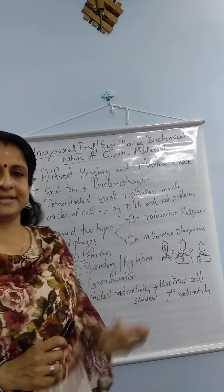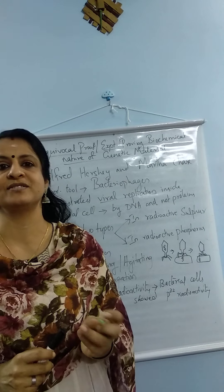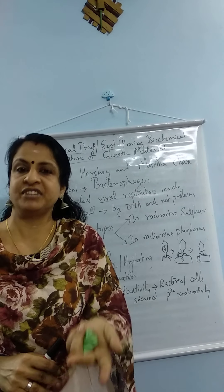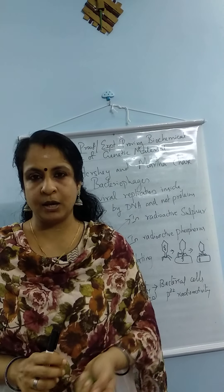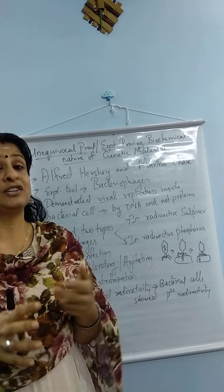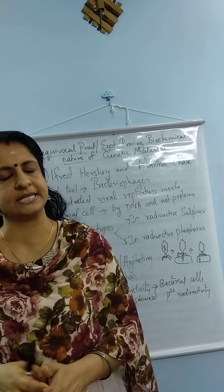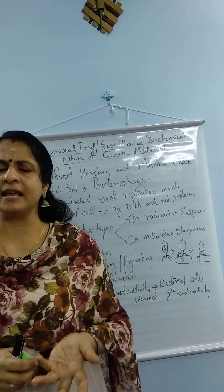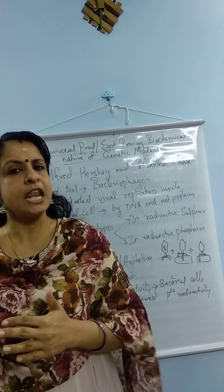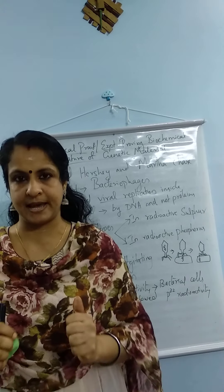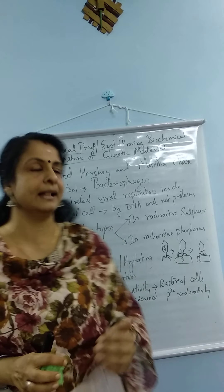In the last topic we understood that Griffith through his experiments explained transformation and transformation principle. After that Oswald, Maclin, and Macleod tried to prove that the real genetic material is DNA and not RNA or proteins. But still there was doubt regarding whether the genetic material is DNA or protein, so this confusion was there.